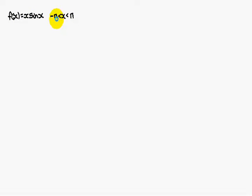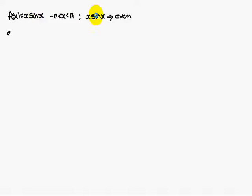When you come across the interval minus pi to plus pi, always discuss the even and odd nature of the given function. Here, x is an odd function and sin x is also an odd function. Odd times odd gives an even function. Therefore, x sin x is an even function. So for that, bn is 0, and a0 and an exist.